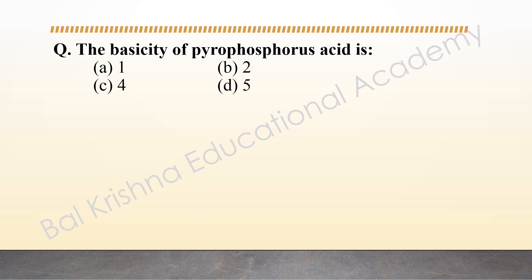The next question is the basicity of pyrophosphorous acid. As already discussed, the formula for pyrophosphoric acid is H₄P₂O₅. It contains 2 P-OH bonds, 2 P-H bonds, and 2 P=O bonds. The basicity of any oxo acid of phosphorus can be calculated from the number of P-OH bonds, since P-OH is an ionizable bond.